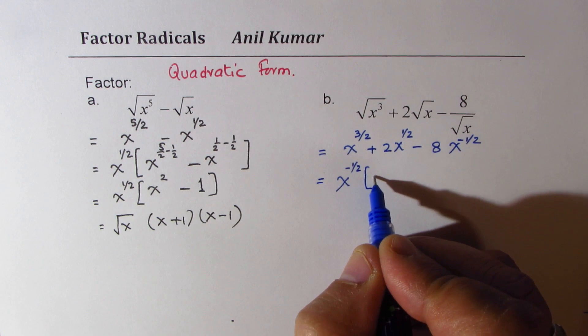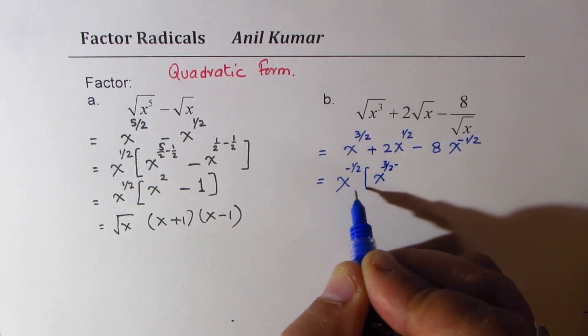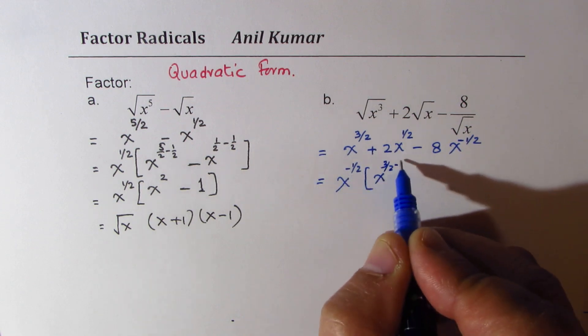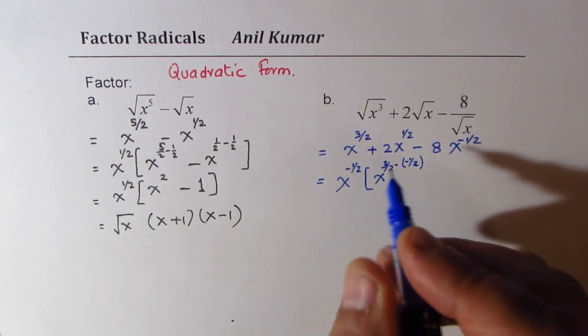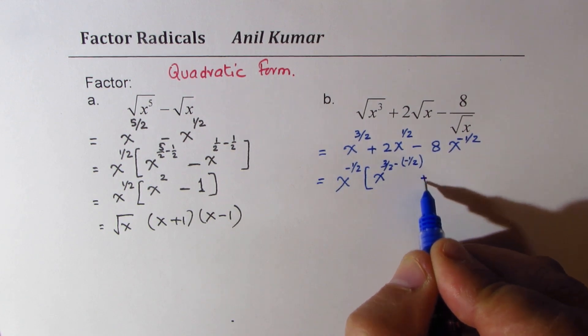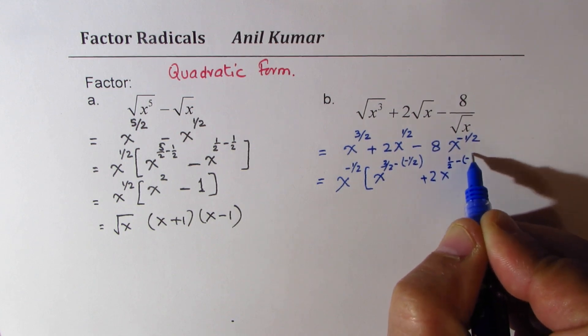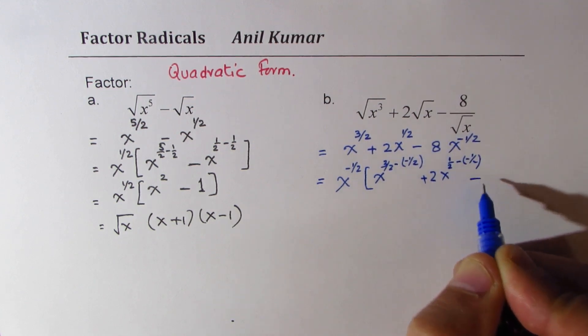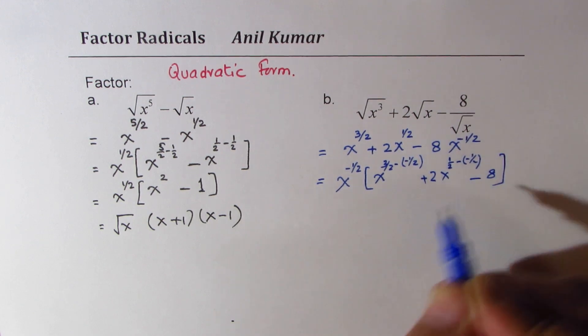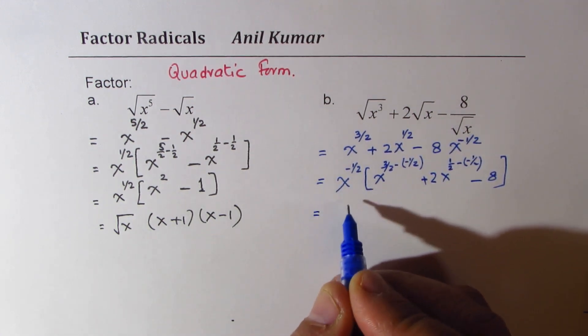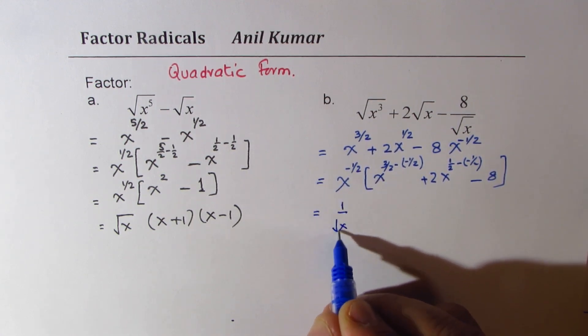So we can take x to the power of minus half common, and here we get x to the power of 3 by 2, minus minus half. Do you get the idea? So it gets added up. And then we get plus 2 x to the power of half, minus minus half, minus 8, since we have taken this factor common.